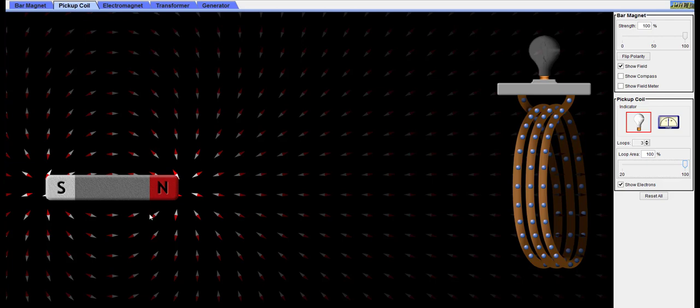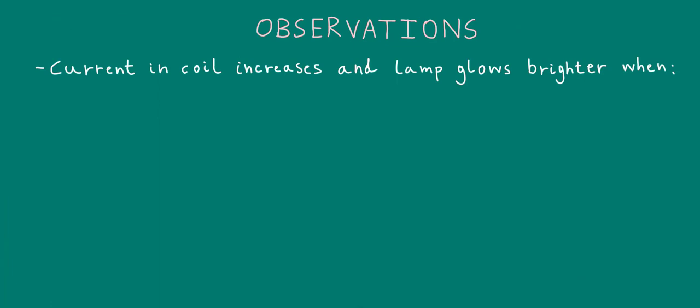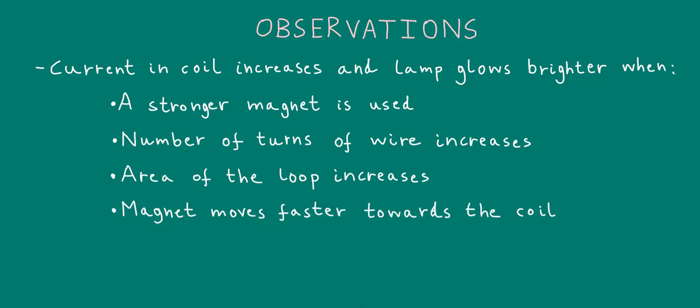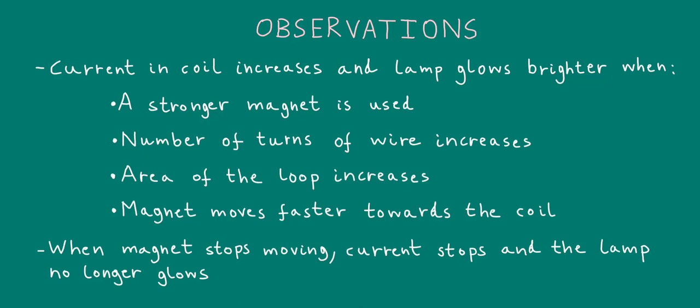Let's make a note of our observations. The current in the coil increases and the lamp glows brighter when a stronger magnet is used, the number of turns of the wire increases, the area of the loop increases, and the magnet moves faster towards the coil. Also, when the magnet stops moving, the current stops and the lamp no longer glows.